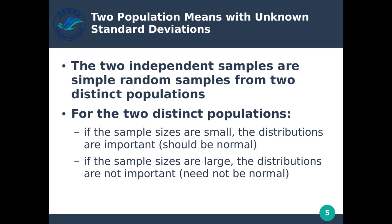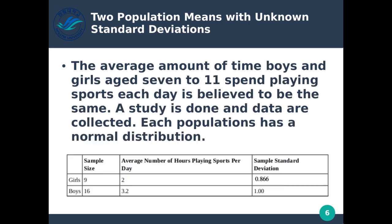For two distinct populations, if the sample sizes are small, the distributions are important — they should be normal if we actually want to compare them, since we're really comparing means. If the sample sizes are large, the distributions are not as important because we have enough data.